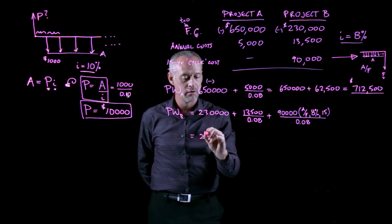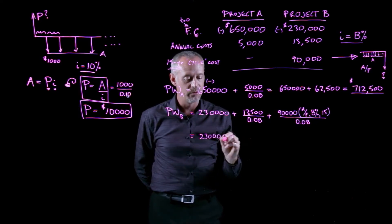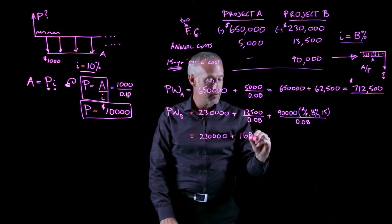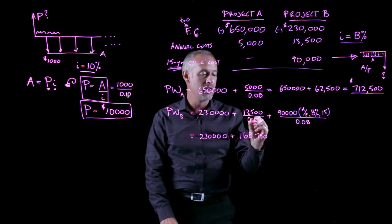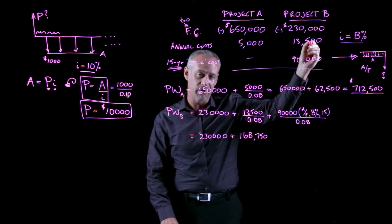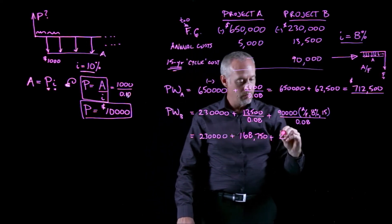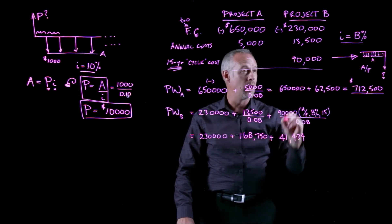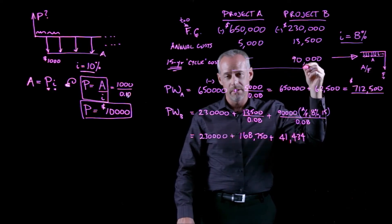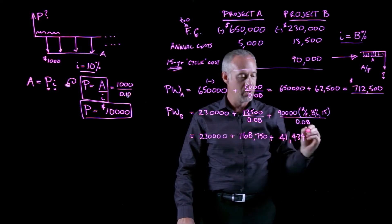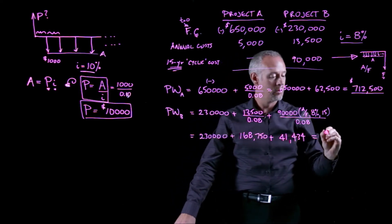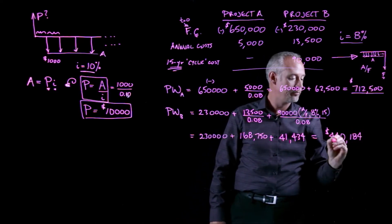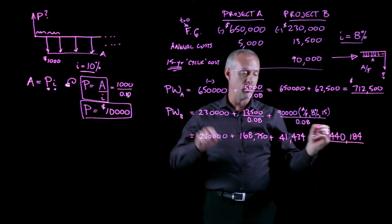So we can work out some of these numbers. We have our $230,000 first cost. We have $168,750 is the present worth of the $13,500 perpetuity. And we have $41,434 as the present worth of the $90,000 that occurs as a cost every 15 years. And I'll just work out what that totals. We have $440,184. So this becomes the present worth of Project B.